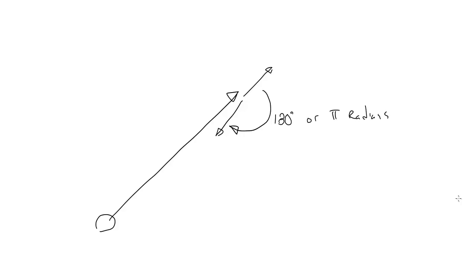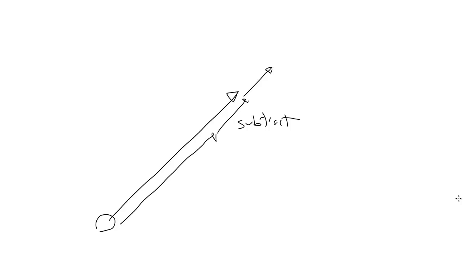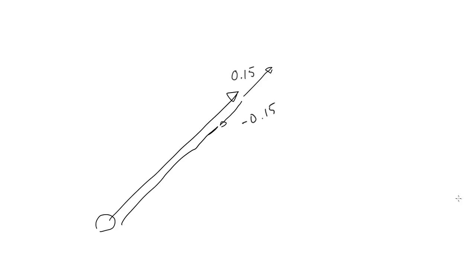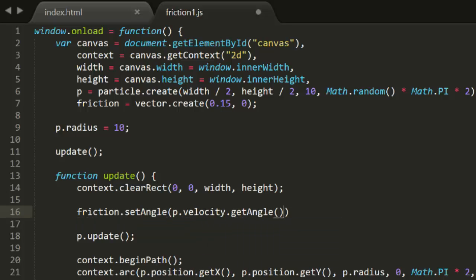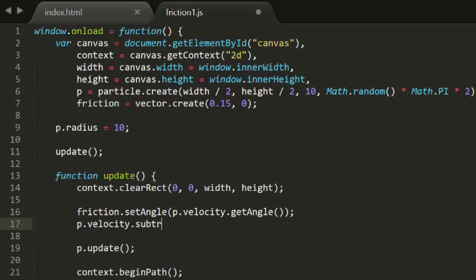Now in each frame, we need to determine the angle of the friction vector and add it to the particle's velocity. There are a number of ways we can do this. We can take the angle of the velocity vector and add 180 degrees, or pi radians, to get the angle for the friction vector, then add the friction to the velocity. Or we could set the friction angle to be the same as the velocity angle and subtract the two vectors rather than adding them. I'll go with subtracting. So we say friction.setAngle(pVelocity.getAngle()) to set the friction's direction, and pVelocity.subtractFrom(friction) to subtract friction from the velocity, slowing down the object.